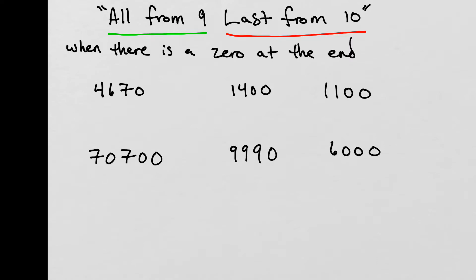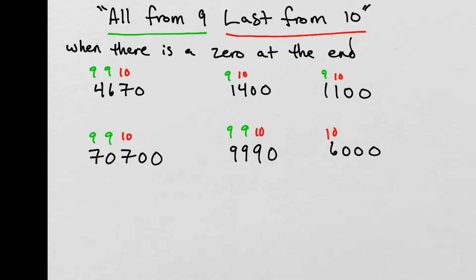The second case is when there's a zero at the end of the number. When there's a zero at the end, we look to the left at the next non-zero digit, and we subtract that one from 10. For example, with 4,670, instead of subtracting the very last digit from 10, we consider the next number over — the 7 — as the 'last from 10.' Working through: 9 minus 4 is 5, 9 minus 6 is 3, and 10 minus 7 is 3. We simply bring that last zero down.